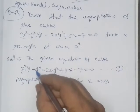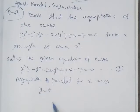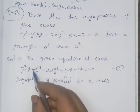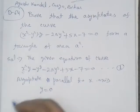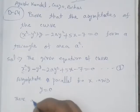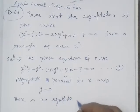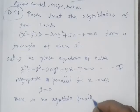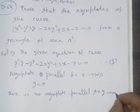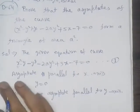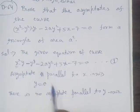Now we check y — the highest power of y is 3, and its coefficient is minus 1, which is a constant, not a variable. When the coefficient of the highest power of y is a constant, we can say there is no asymptote parallel to the y-axis. So there is no asymptote parallel to the y-axis.